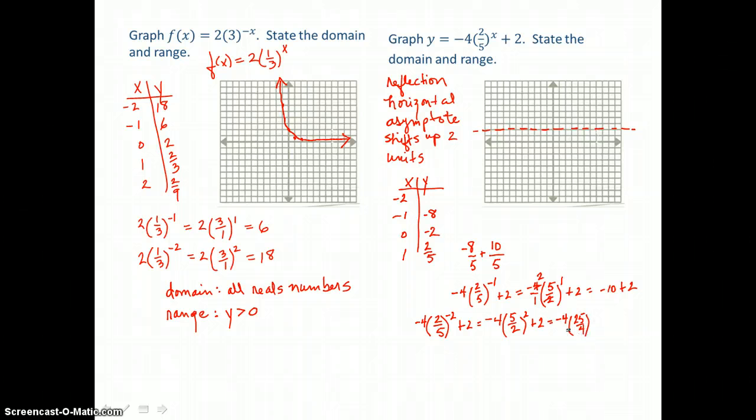And then multiply. 5 halves to the second power is going to be 25 fourths. And when I multiply that times negative 4, the 4's will cancel. So I'll just be left with negative 25. And negative 25 plus 2 is going to give us a y value of negative 23. So I'll put that in my table of values.